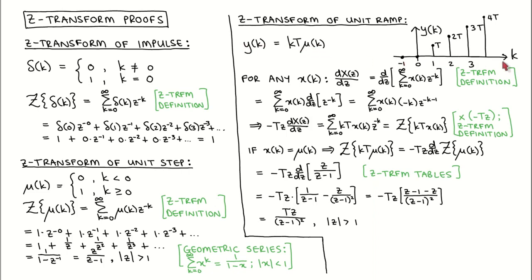A plot of the unit ramp is shown here. For the intermediate result, we take the derivative of the Z-Transform of a signal with respect to Z. We use the definition of the Z-Transform, move the derivative into the sum, and apply the derivative. We then multiply by minus TZ, and we get that minus TZ times the derivative of X with respect to Z is equal to this sum. We see that this sum is equal to the definition of the Z-Transform if the signal being transformed is kT times x of k, which is equivalently written here.